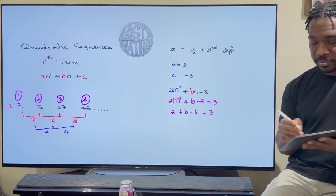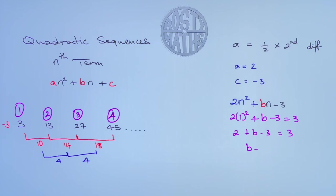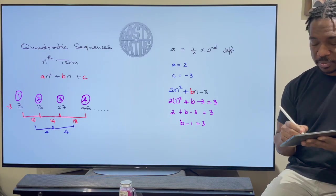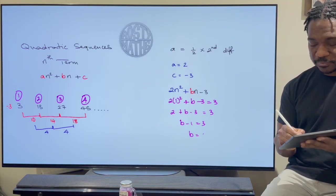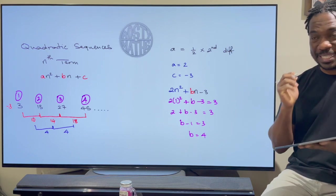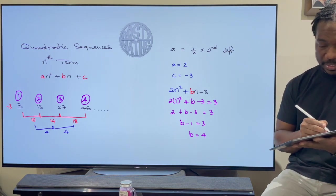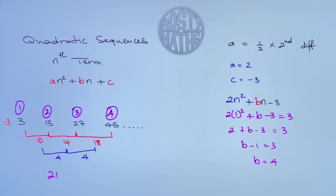2 take away 3 is minus 1. So b take away 1 is 3. Add the 1 to both sides. b is equal to 4 and that means that the nth term of this sequence is 2n² plus 4n take away 3.